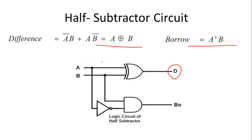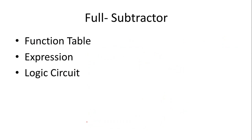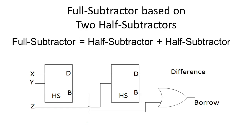So we have two expressions: A XOR B for difference, and A-complement times B for borrow. In the circuit diagram, for D we use an XOR gate taking A and B, and for borrow there is one NOT gate for complement and one AND gate. If we put it in a box, this is our half subtractor.